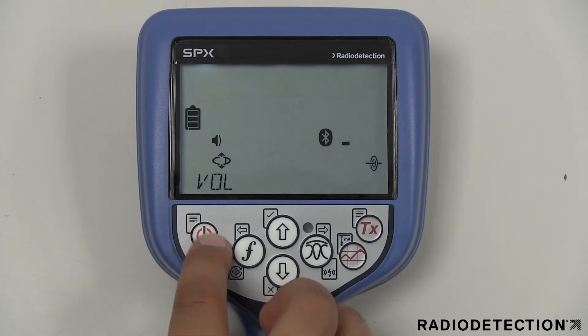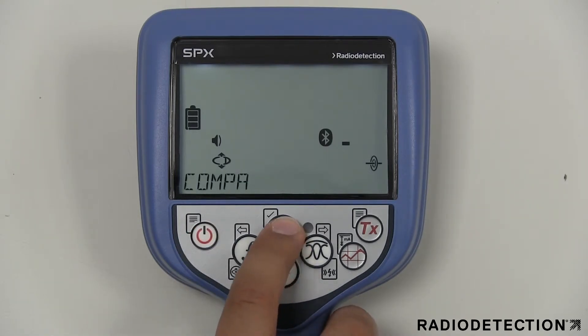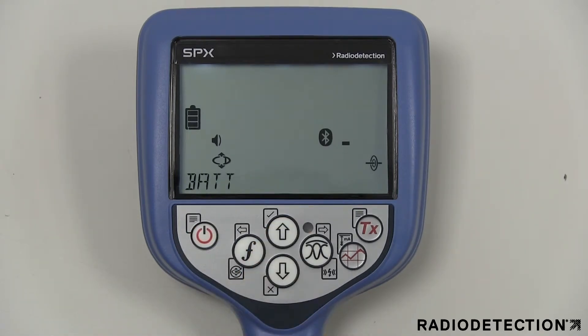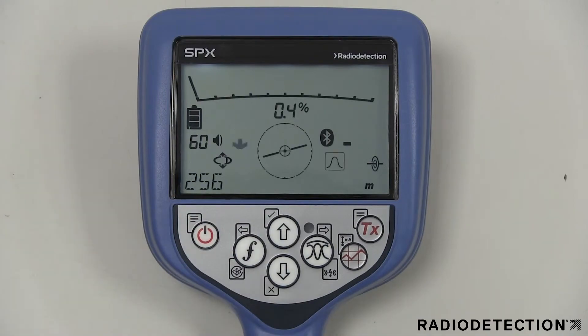The BAT menu option allows you to set the locator battery type to match the currently installed type. This is to ensure optimal performance and correct battery level indication. The battery options are alkaline, nickel metal hydride, or lithium-ion, although lithium-ion rechargeable battery packs will automatically be detected by the locator.